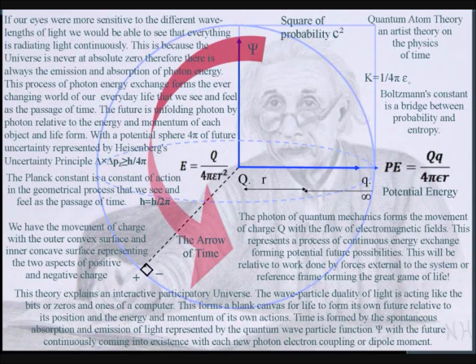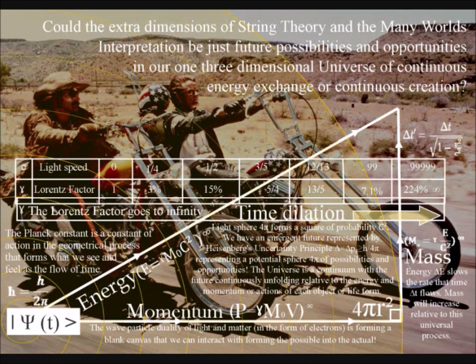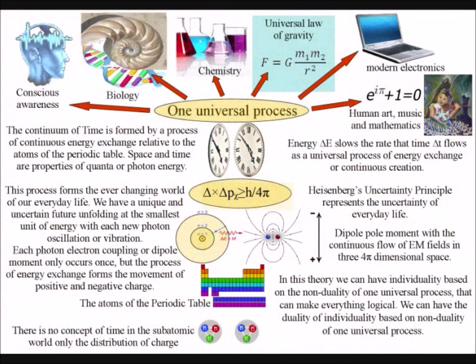In this theory we can have individuality based on the non-duality of one universal process, but we lose an important aspect of reality that can make everything logical if we just say everything is consciousness and then not try and explain. Here we can have the duality of individuality based on non-duality.